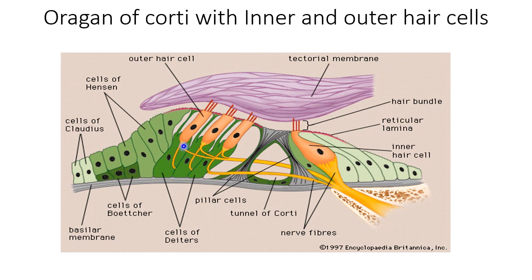You can see there are nerves ending at the base of the hair cells. These nerves are afferent nerves arising from the spiral ganglion, crossing the organ of Corti, and ending at the base of each hair cell — carrying sensation from the hair cell to the brain. There is another kind of nerve called efferent nerve, which comes from the superior olivary nucleus to the outer hair cells.